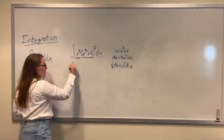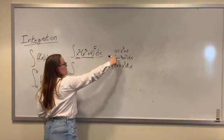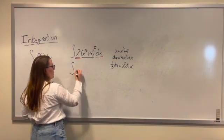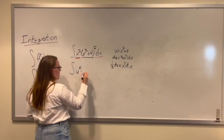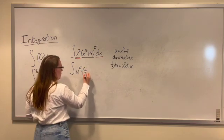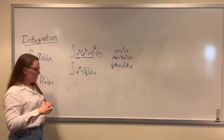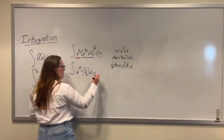So what we are left with, let me plug everything in. We have, let's do our u first. This is going to be u to the fifth times our 1 third du. And then we can integrate this like normal.